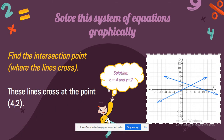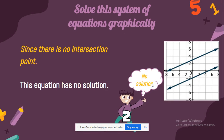These lines cross at the point (4, 2). The solution is x equals 4 and y equals 2. Now let's look at another example: since there is no intersection point, as you can see here, this is an example of parallel lines.